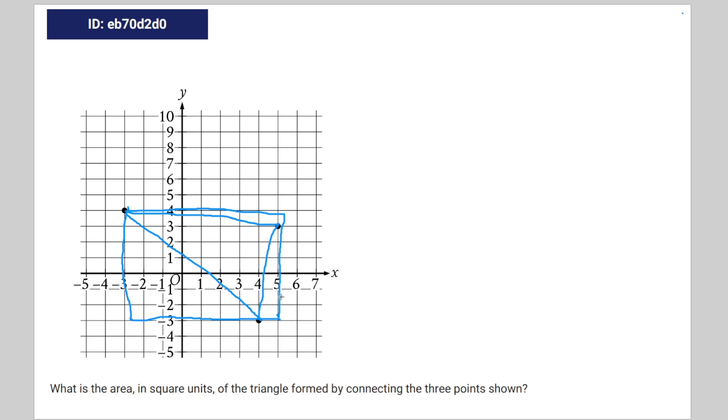We have to find the distance between this point and this point, which is one, and then the distance between this point and this point, which is negative three to five, so eight.